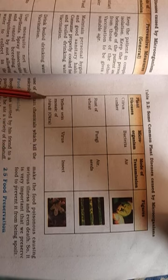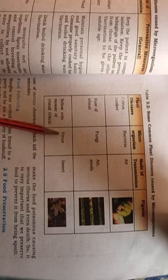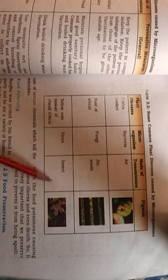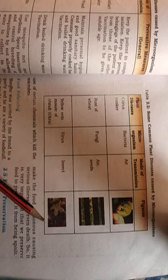Next is yellow mosaic veins of bhindi, which is okra. It is caused by a virus. It spreads through insects — insects carry viruses from infected plants to healthy plants.